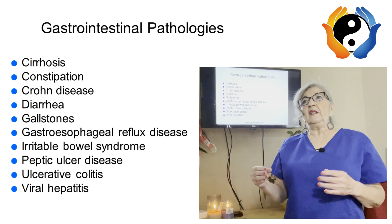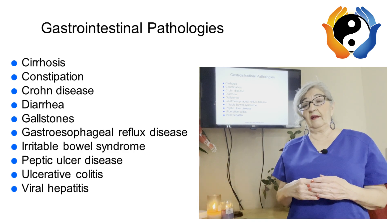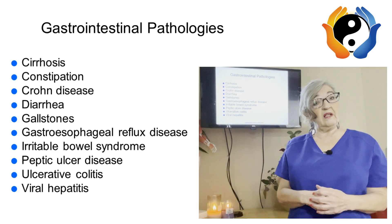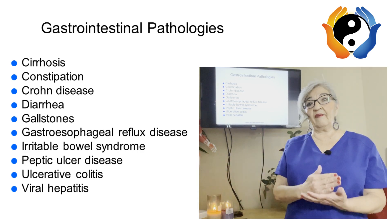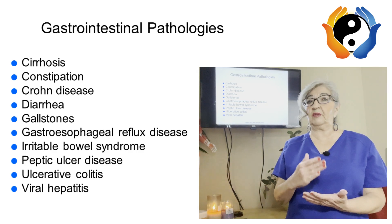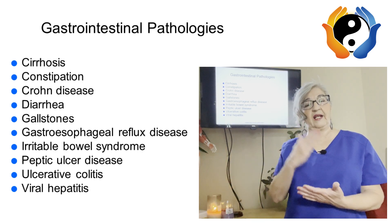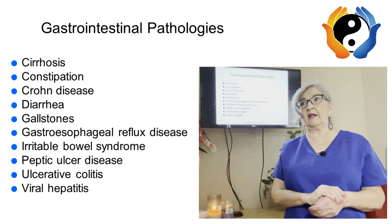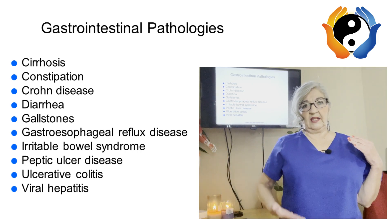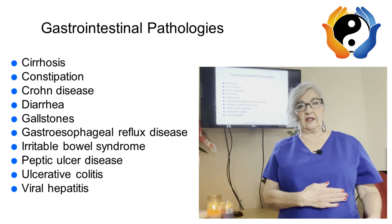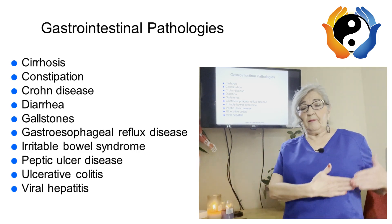When people are constipated, they should take a minimum of 25 to 30 grams of fiber and plenty of water. Water intake is based on your weight: if you weigh 120 pounds, drink 60 ounces of water — just take your body weight and divide by two for ounces. For massage, always work clockwise: ascending colon, transverse colon, descending colon.